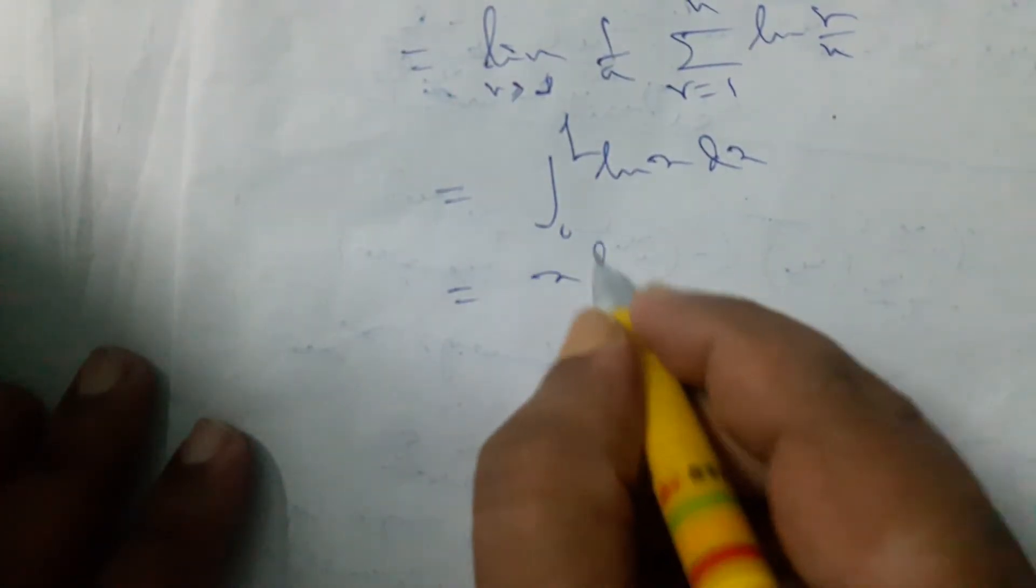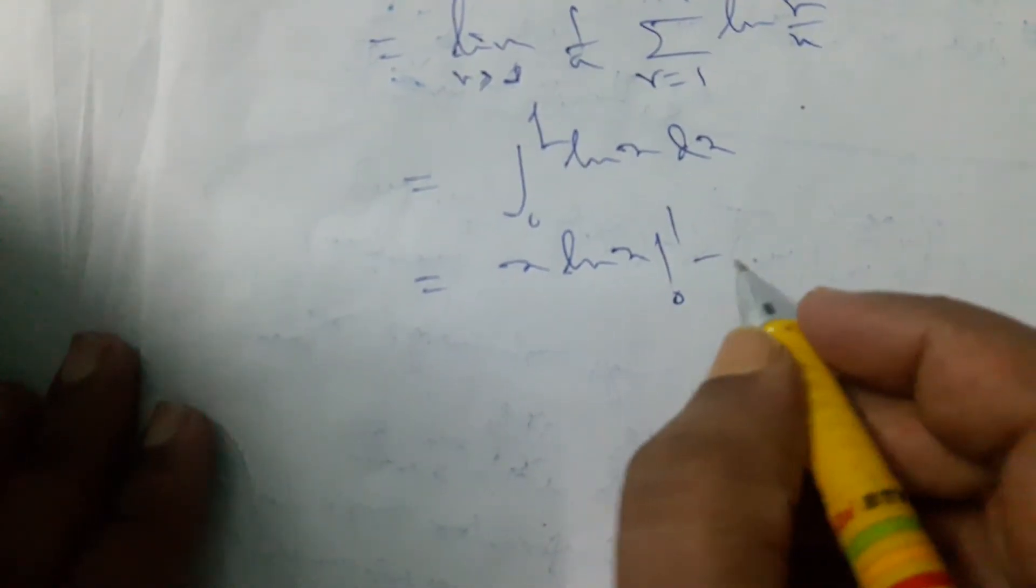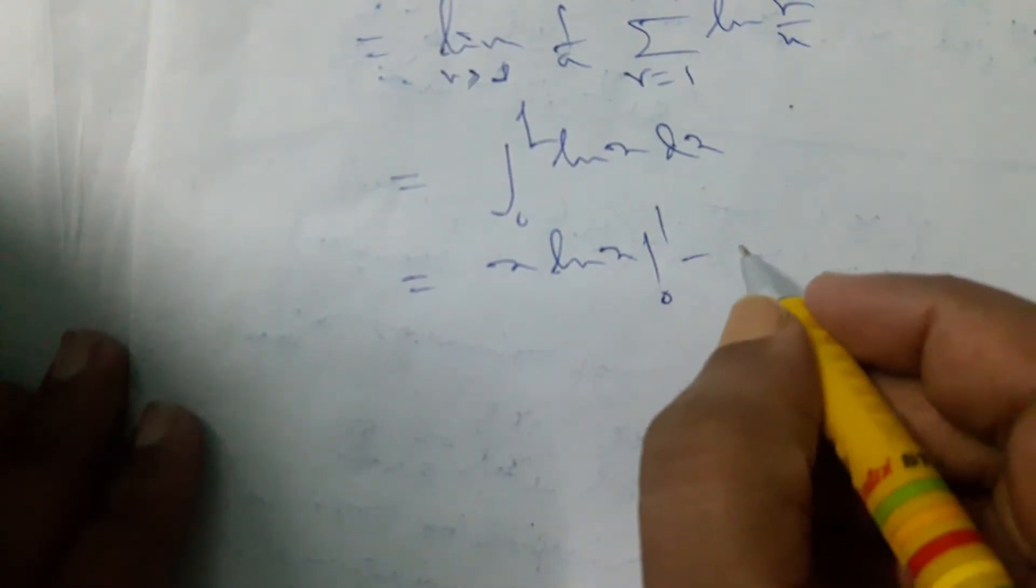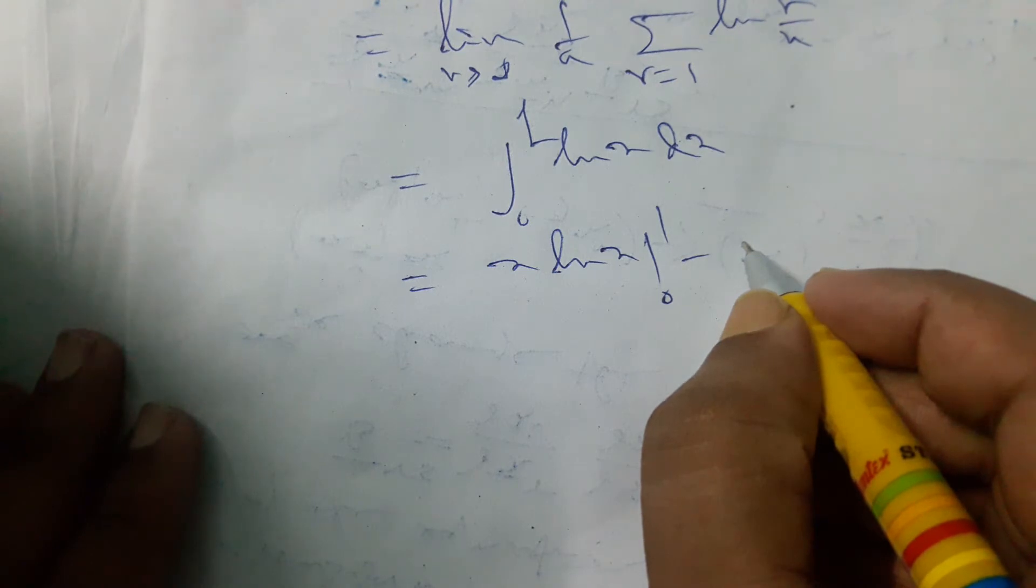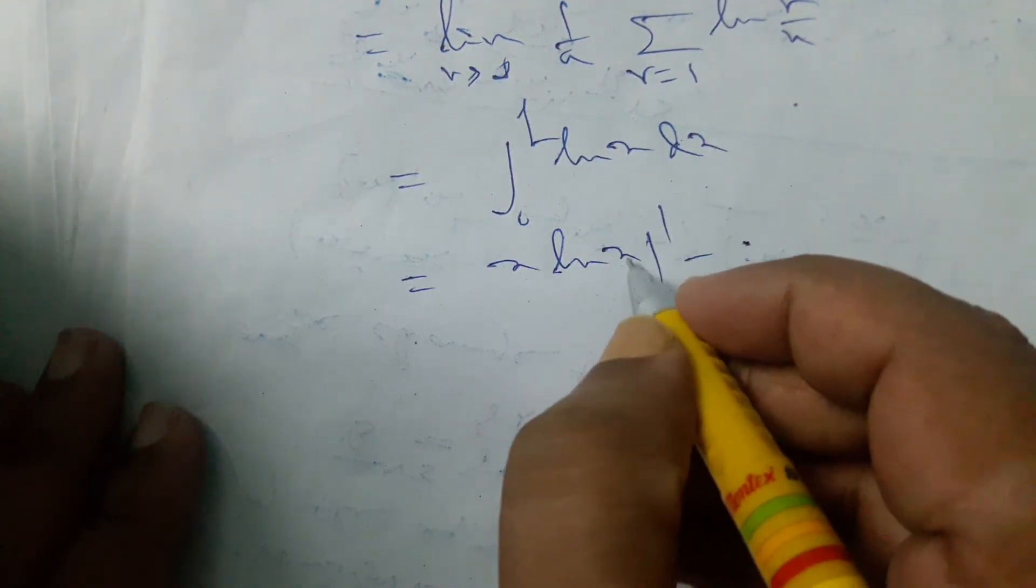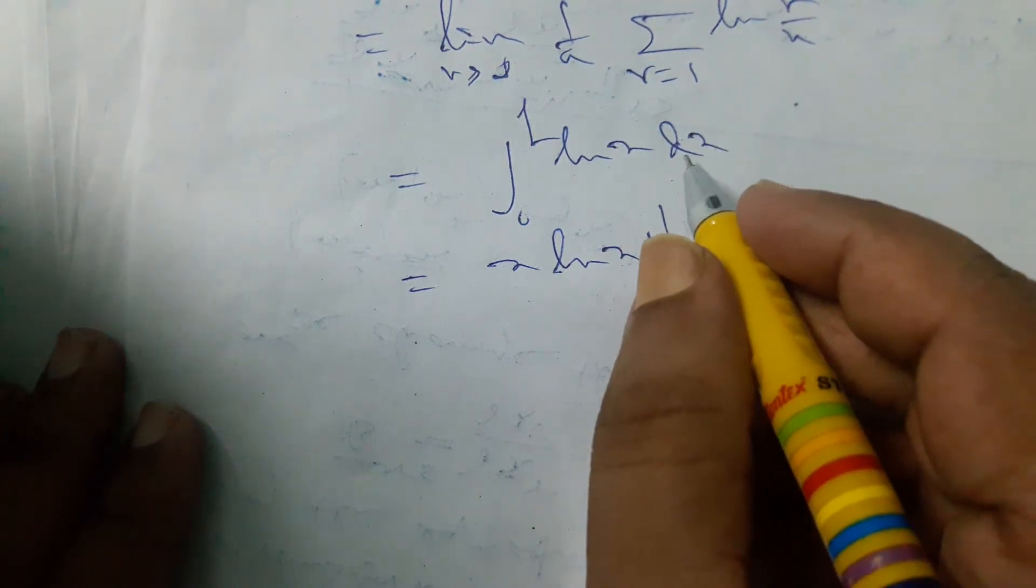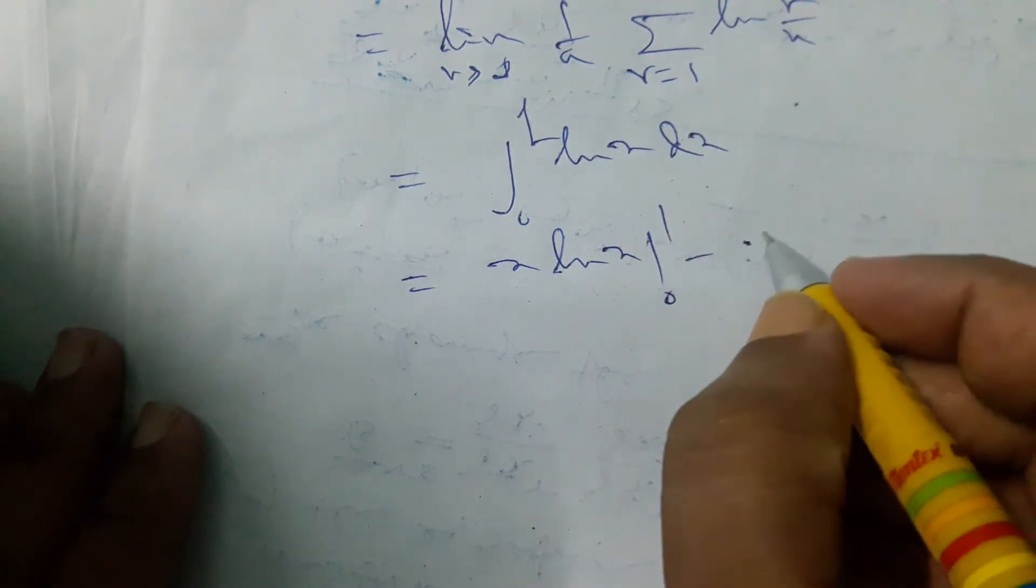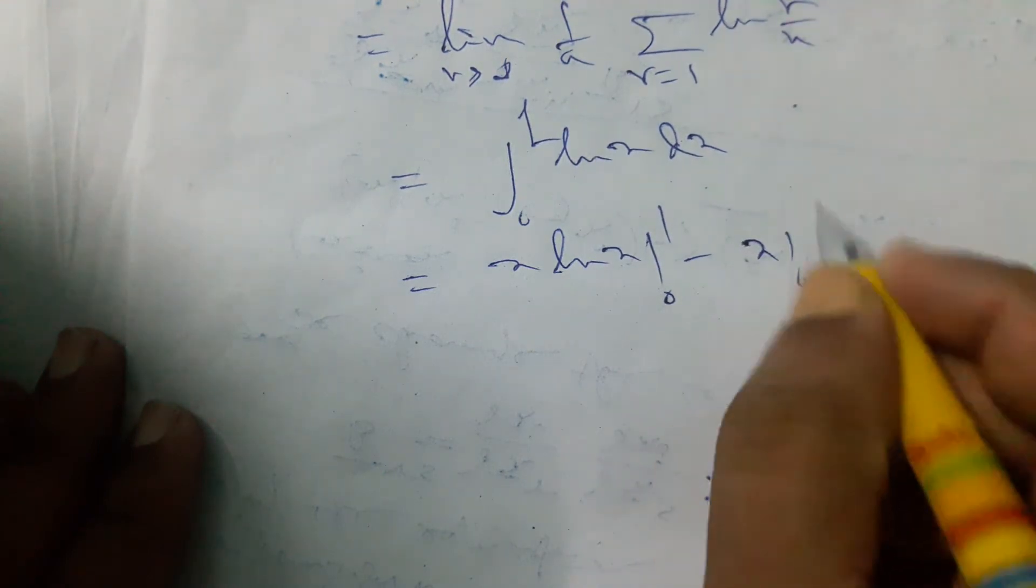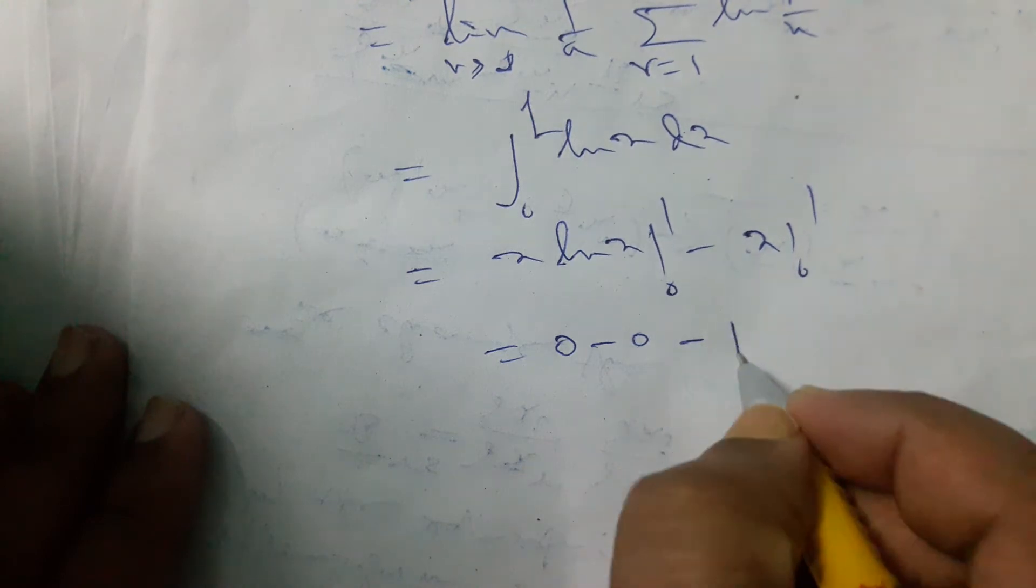Using by-parts rule, ln x dx, that is x log x minus integral of x times the derivative. Using integration by parts, we evaluate from 0 to 1, which gives x ln x minus x from 0 to 1. So it will be 0 minus 0 to 1.